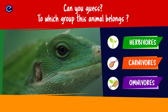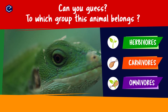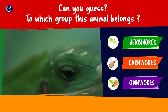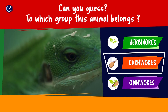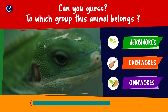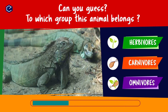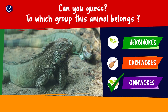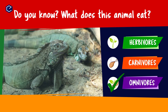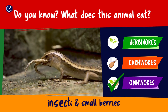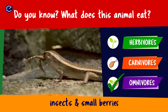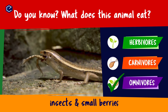Can you guess to which group this animal belongs? Herbivores, carnivores, omnivores. Do you know what this animal eats? A lizard eats insects and small berries. So lizard is an omnivore.